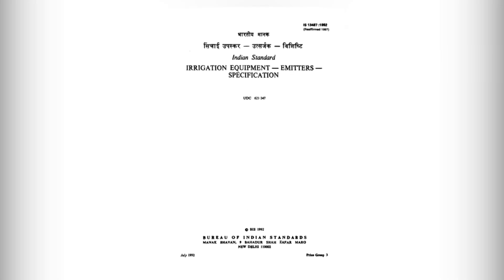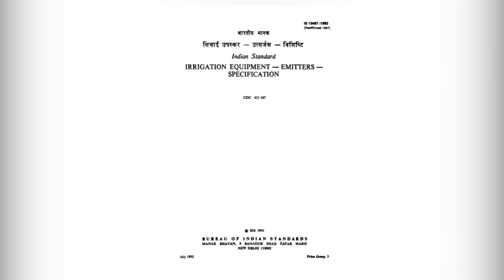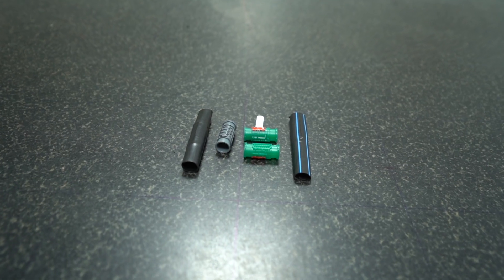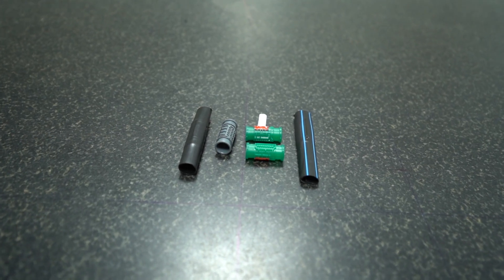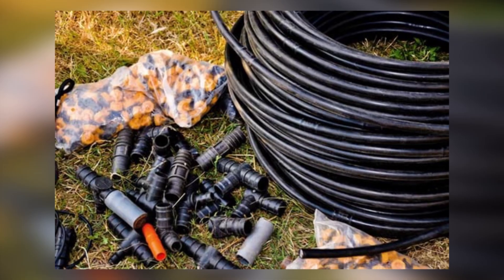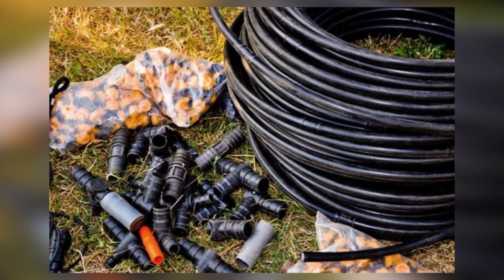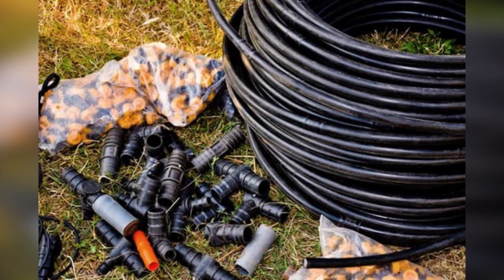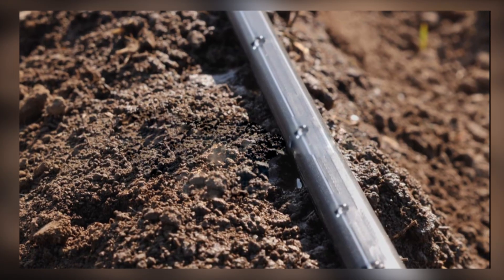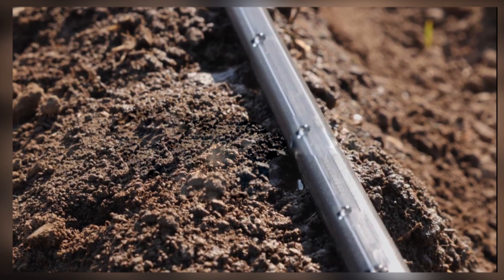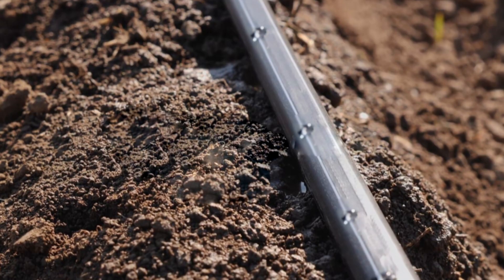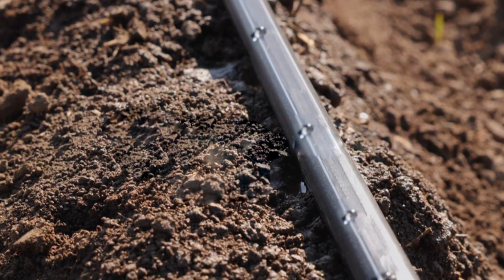The standard classifies emitters into five major types. 1. Inline emitters, which are placed inside a pipe or tubing, release water slowly and evenly to plants.